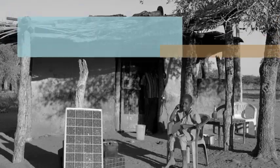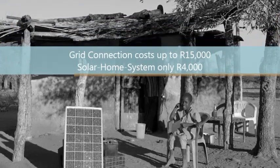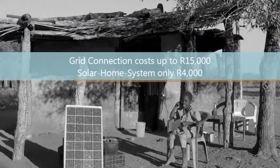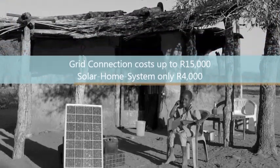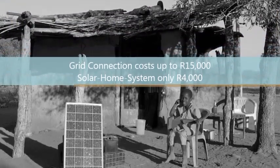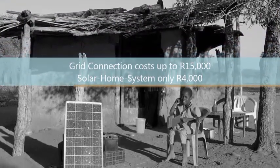Their focus is on solar home systems to provide electricity for those in need without relying on a grid connection. A grid connection can cost between 10,000 and 15,000 Rand, while a solar home system only costs 4,000.